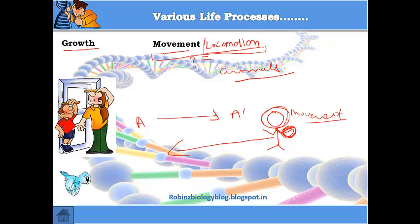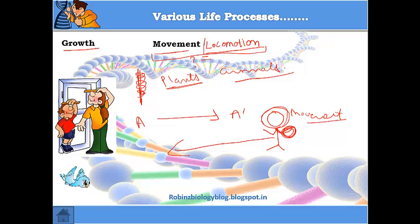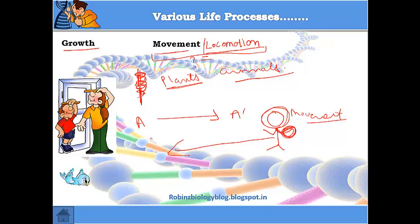Locomotion and movement together are shown by animals, while movement alone is a characteristic feature of plants. Plants show movement because they respond to their environment — for example, a money plant twirls around a moss stick, responding to the touch of the stick. We'll cover this in detail in the chapter on control and coordination.